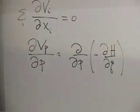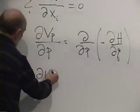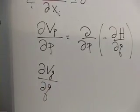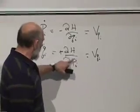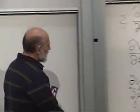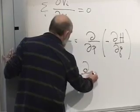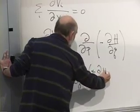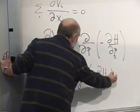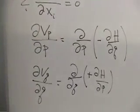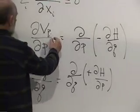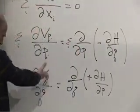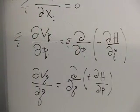That's the first term. The second term in the divergence is just dvq/dq. And what is v_q? That's plus dH/dp. So the second term becomes d/dq of plus dH/dp. If we have several coordinates and momenta, we put an index i and sum over i.